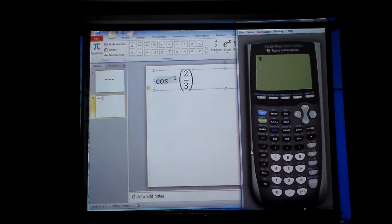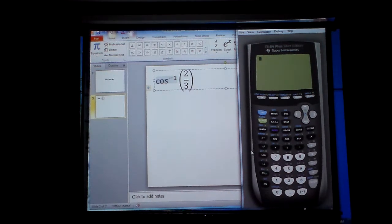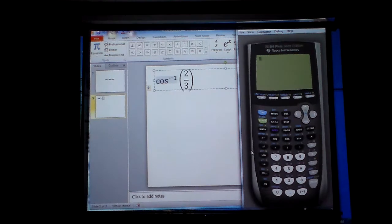Now this particular one is given in fraction form. Sometimes the ratio might be given in decimal form. But basically what I need to do is find the angle.